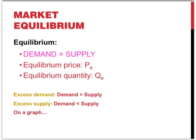When we talk about market equilibrium, equilibrium means that demand equals supply, and this leads to the determination of an equilibrium price, PE, and equilibrium quantity, QE. At a specific price there may be excess demand, where the quantity demanded is greater than the quantity supplied, or excess supply, where the quantity demanded is smaller than the quantity supplied.